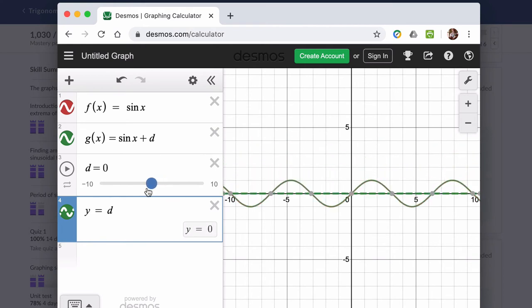So here at the parent function, originally sine of x, the midline is at 0. So in that case, it would be f of x equals the sine of x plus 0. But let's say d is 1.